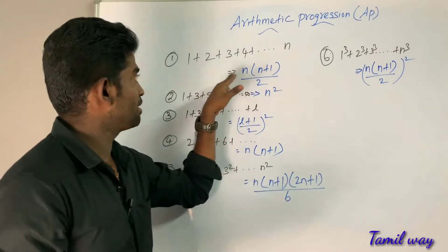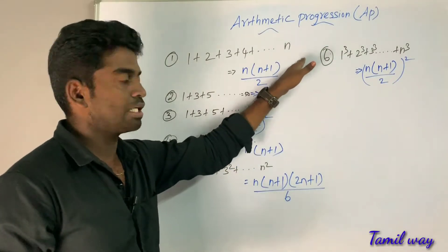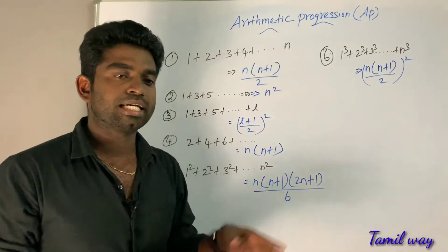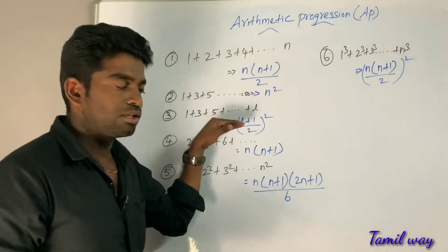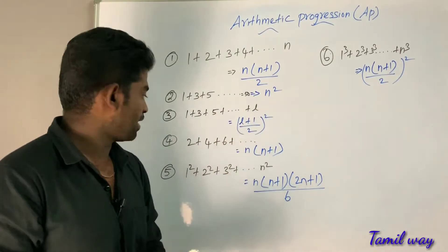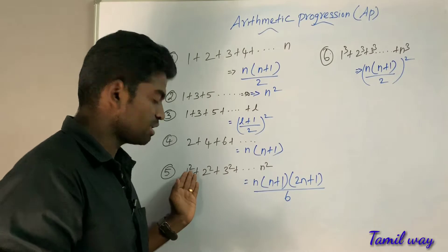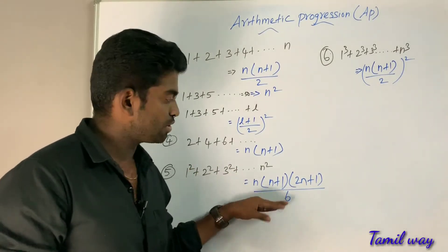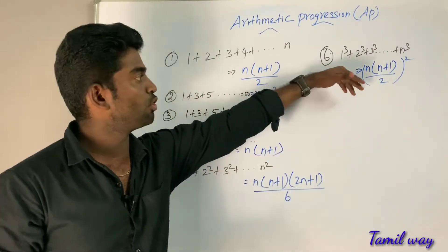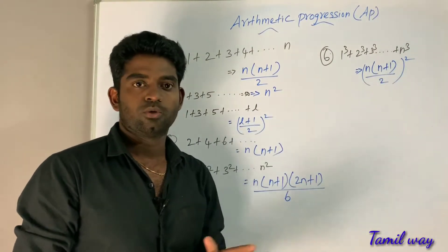What are these methods? First, the number of numbers in a series — for example 1, 2, 3, 4, 5. The formula is N(N+1)/2. This is the first method. To get the sum of odd numbers, the formula is (L+1)/2 whole squared. The formula N(N+1) squared, and N(N+1)(2N+1)/6 for sum of squares. For sum of cubes, the formula is N(N+1)/2 whole squared.